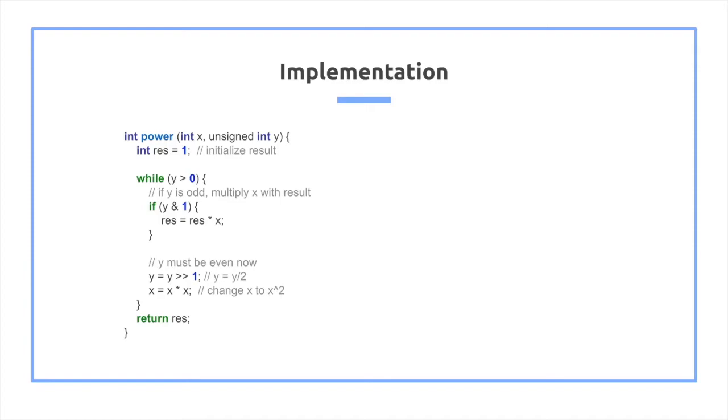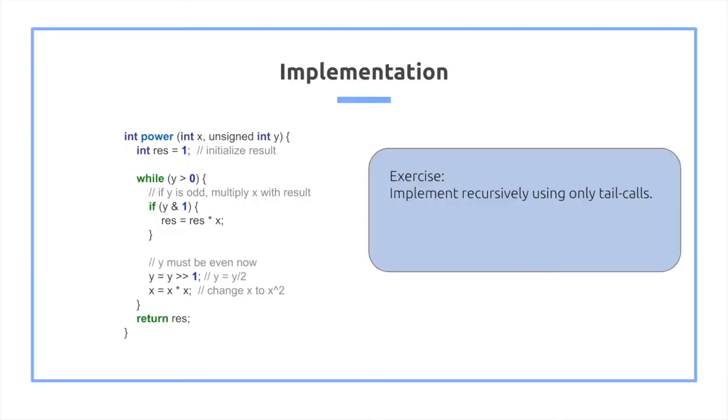As an exercise, you can try implementing this recursively using only tail calls, where a tail call is you just simply call the method with no other addition or multiplication operation attached to it. As a hint for this, read the following backwards.